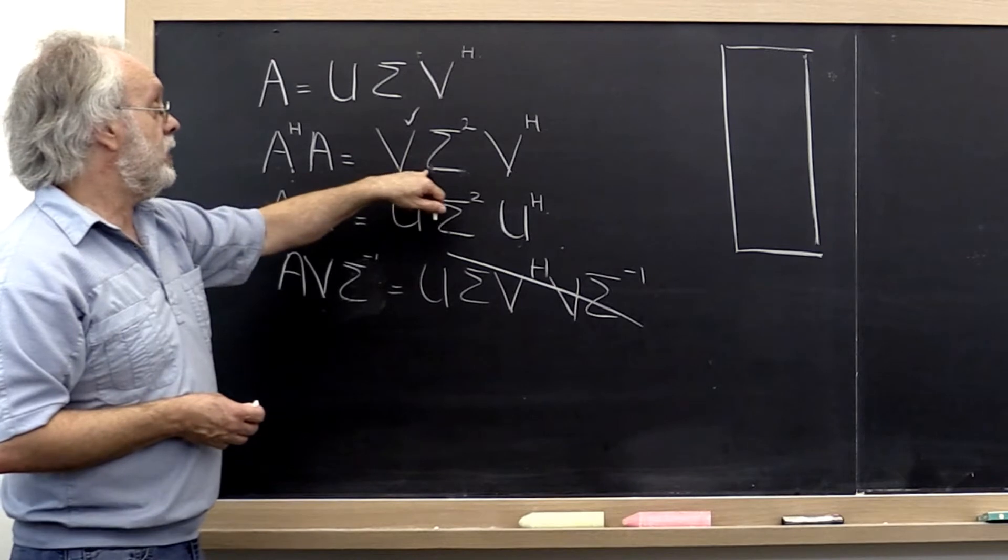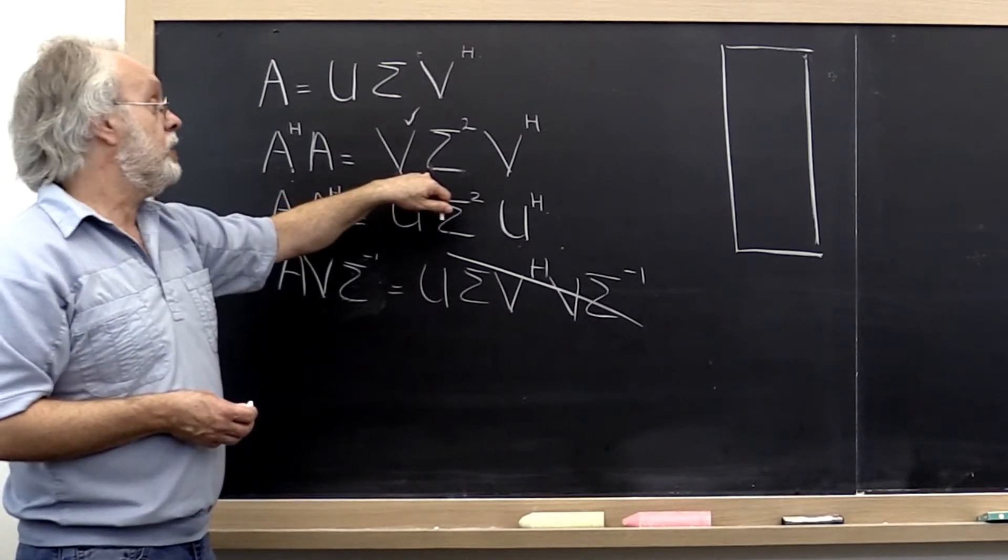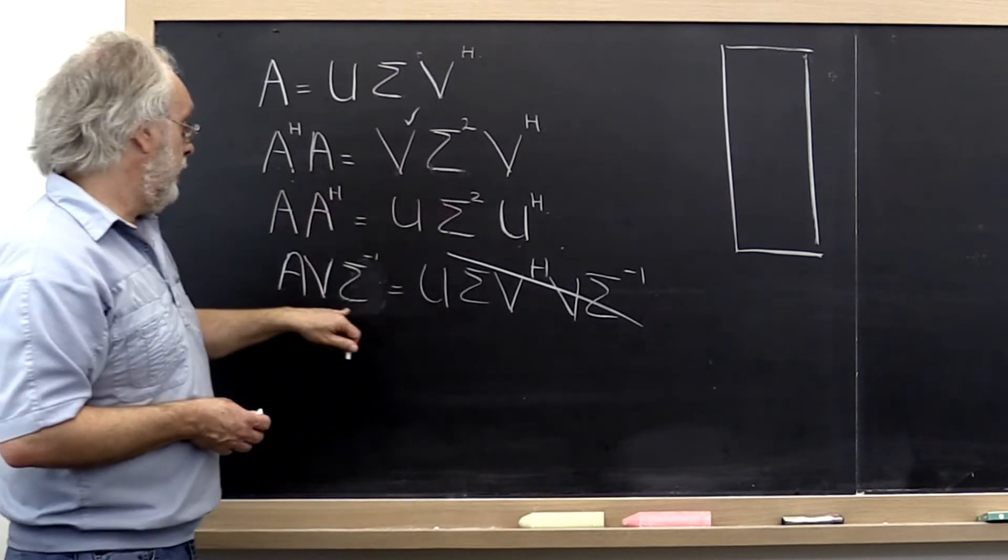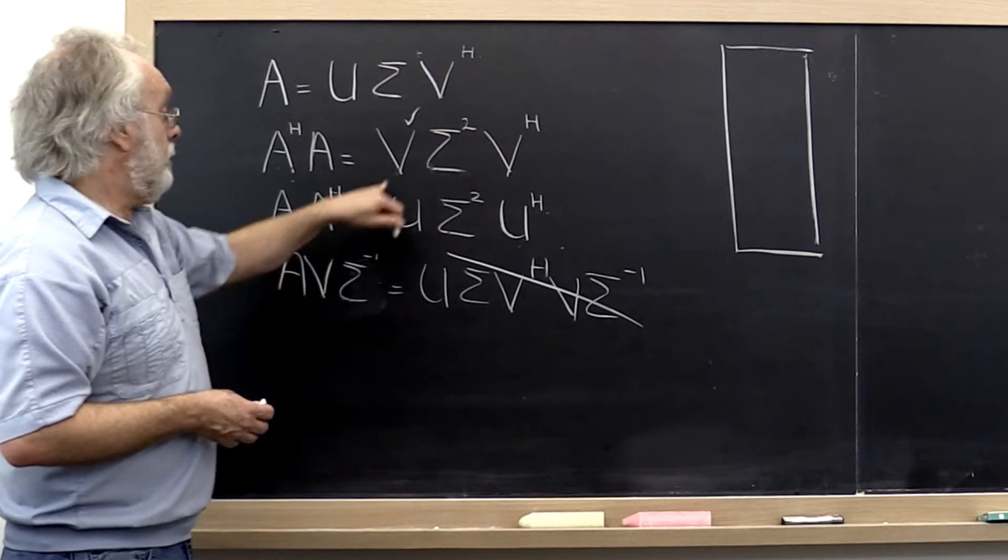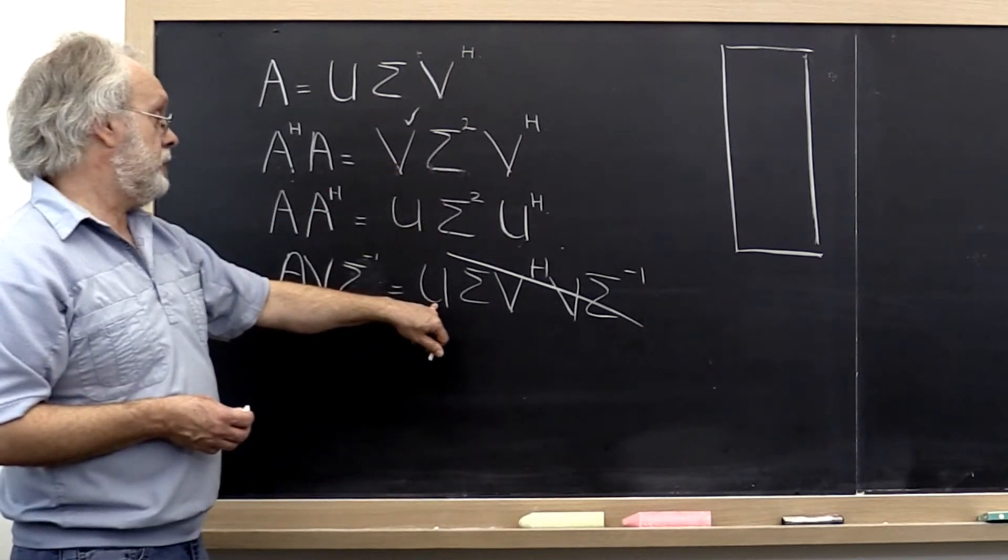We can then use the QR algorithm that we discussed last week to compute its spectral decomposition. And we can then, from V and from sigma, compute the unitary matrix U.